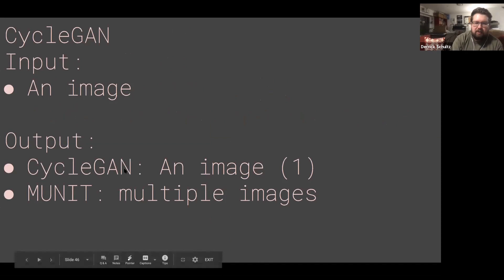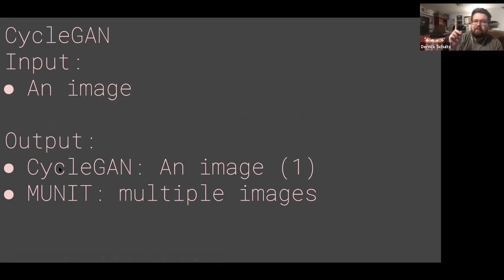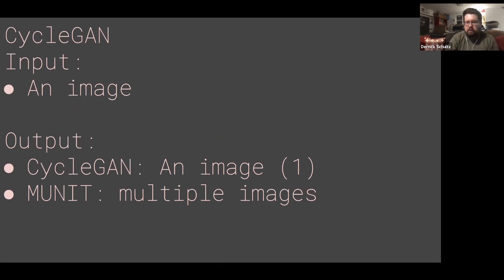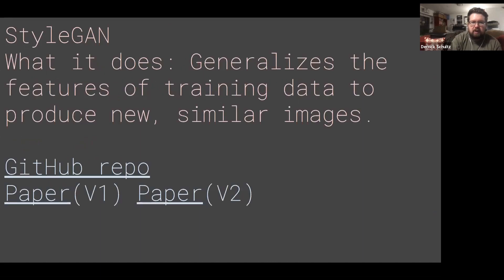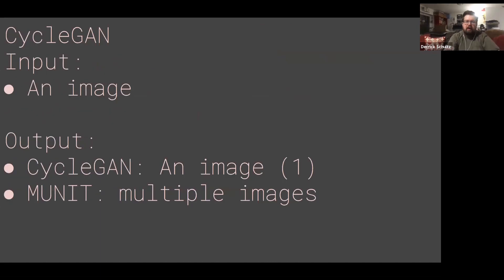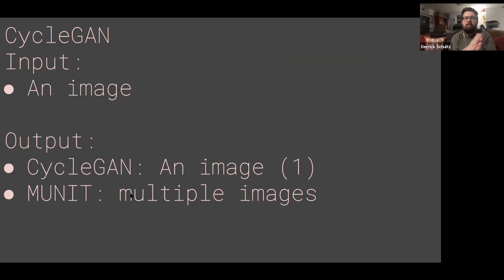The difference between CycleGAN and MUNIT is in the output. CycleGAN produces one image, and it only ever produces one image from an input — if I feed it the same horse image, it always produces the exact same zebra output. Unlike MUNIT, which actually produces multiple versions of the same image. It's basically the same translation but the colors or textures shift a little bit, so you get multiple versions and can say, I like this version or I like that version.